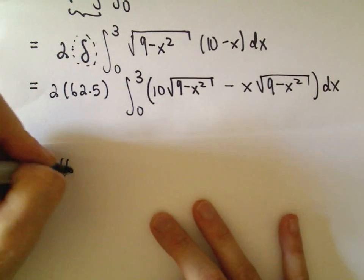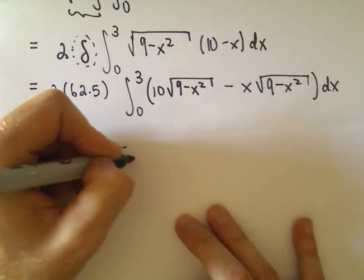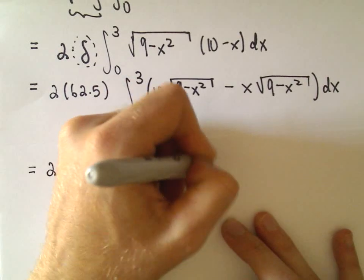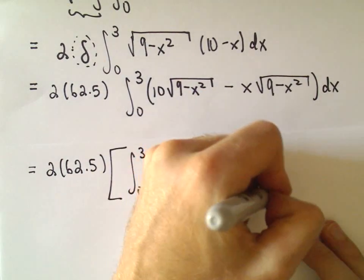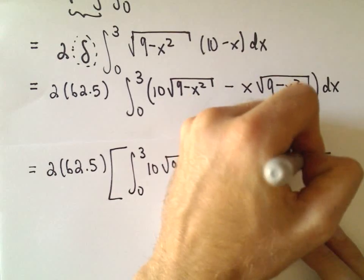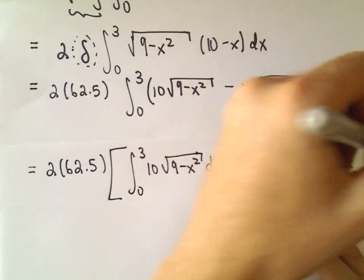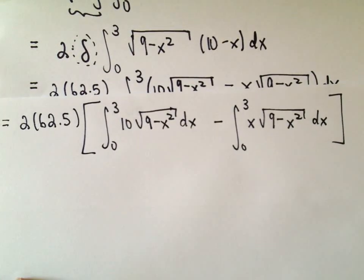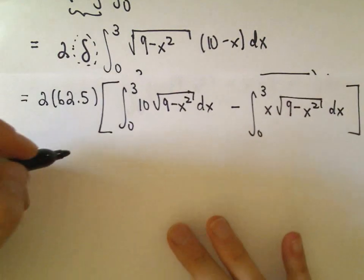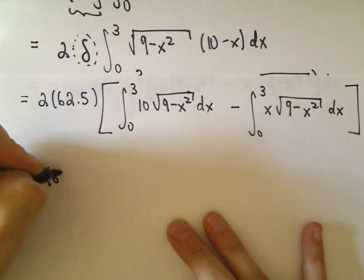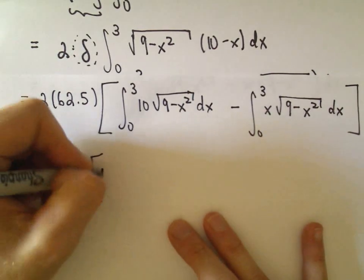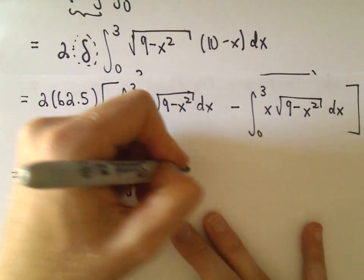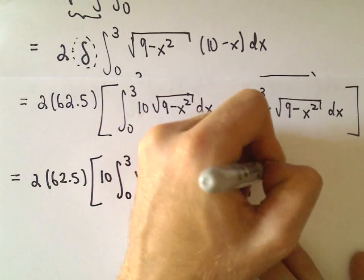So we've got 2 times 62.5. I'm going to break this up: I'll integrate from 0 to 3 of 10 times the square root of 9 minus x squared dx, and then subtract the integral from 0 to 3 of x times the square root of 9 minus x squared dx. To calculate the first part, I'll pull the 10 out front and interpret the integral geometrically. We'll do a separate u-substitution for the other part.